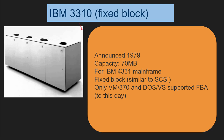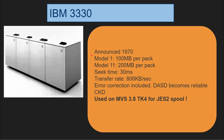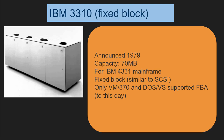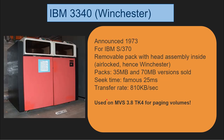The 3310 was announced in 1979 — the numbering doesn't have to make sense. It had 70 megabytes capacity and was built specifically for the 4331 mainframe, which was primarily a VM and DOS/VS oriented machine. This was a fixed block disk, similar to SCSI devices, and that's why VM and DOS/VS support FBA disks to this day.